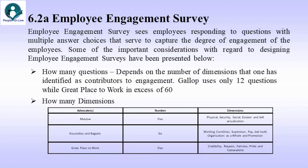Costelius and Bagiatis talked about six dimensions: working condition, supervisor, pay, job itself, organization as a whole, and promotion. Great Place to Work talks about five dimensions: credibility, respect, fairness, pride, and camaraderie.